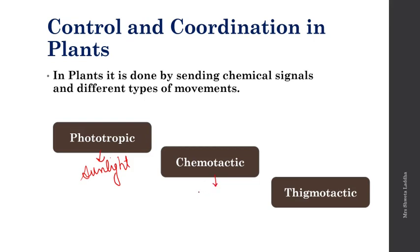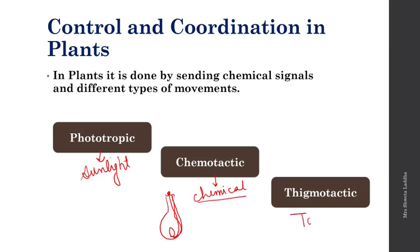Chemotactic movement is movement attracted towards different types of chemicals. A very good example of chemotactic movement is when the pollen tube travels through the stigma, style, and ovary towards the ovule and egg via certain chemicals.